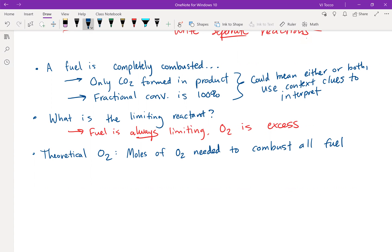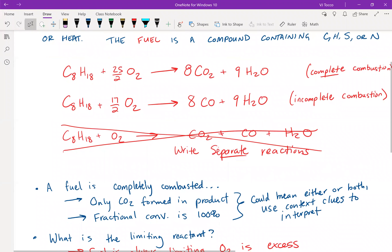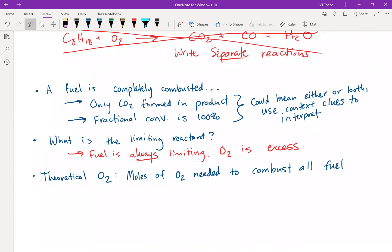For example, if I fed 100 moles of octane to an engine, I would need 25 halves - 12 and a half times 100 - 1250 moles of O2 would be my theoretical O2.